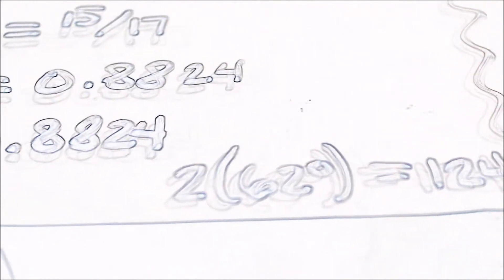Once you do that, you multiply it by 2 to equal 124. Then another example is intersecting chords. The formula is A times B equals C times D.